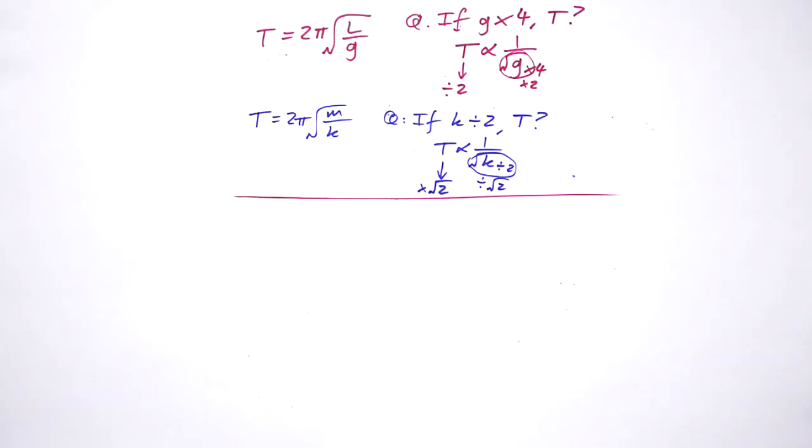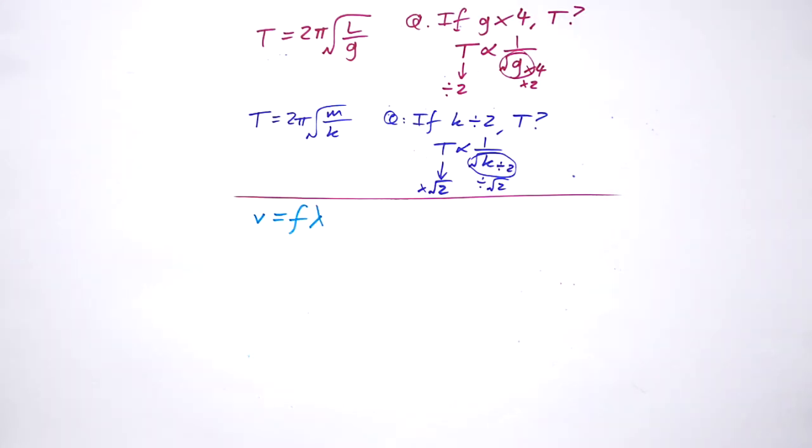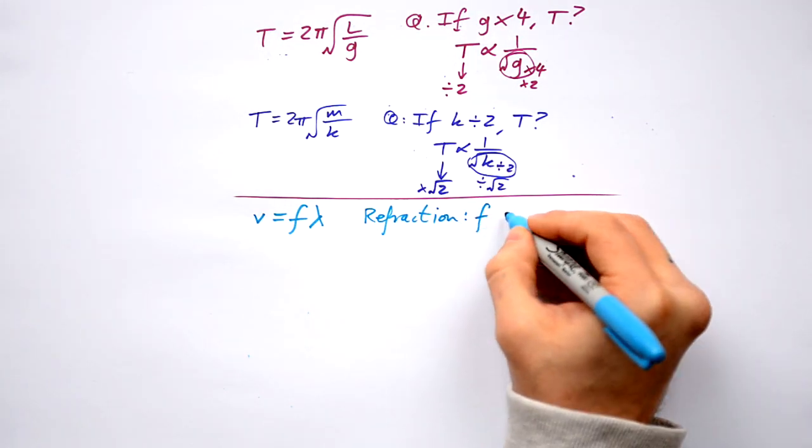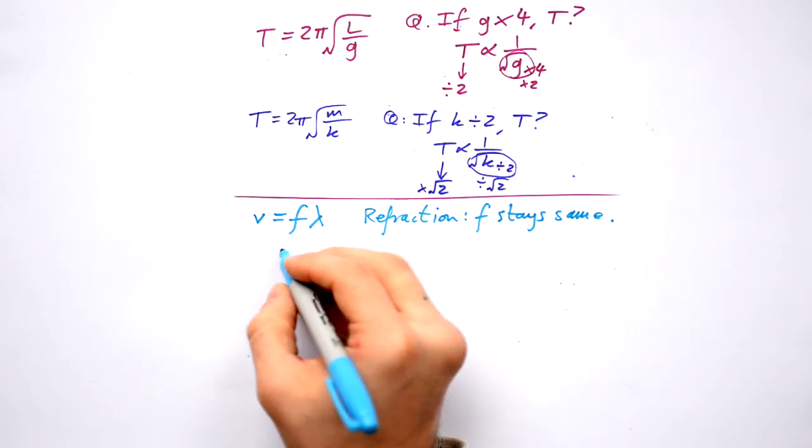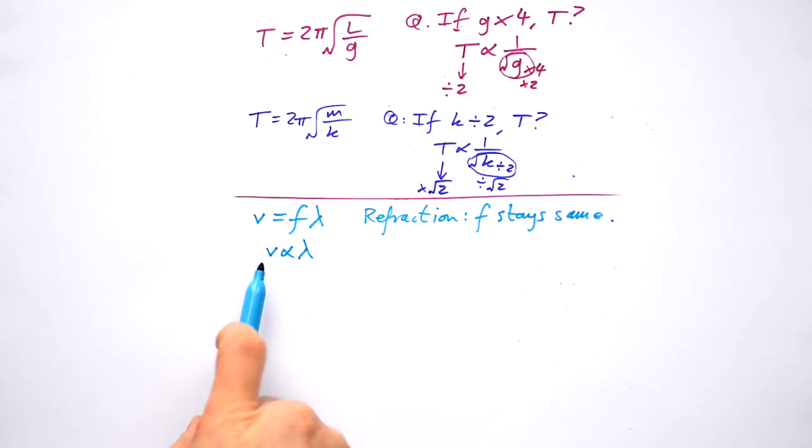This really is one of the things that comes with practice. Being able to deal with proportionality questions as quickly as possible will save you a lot of time in your exam. So let's say that I have a question which involves the wave equation v equals f lambda. Let's say that we're talking about refraction. In refraction you should know that frequency stays the same no matter what medium the light is in. If that's the case then we can say that v is proportional to lambda. Therefore if a light ray slows down then the wavelength gets shorter. Smaller speed smaller wavelength.